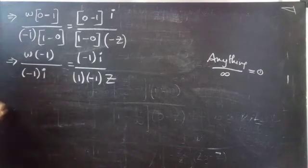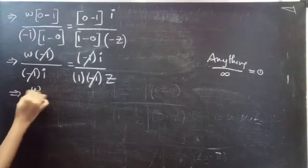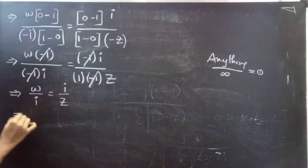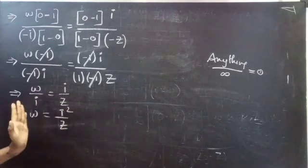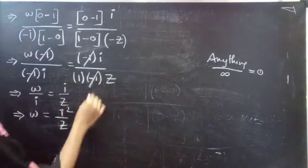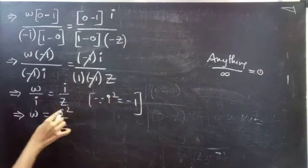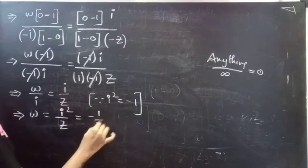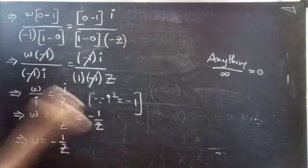Here we cancel −1 on both sides. So you get ω/i = i/z. Therefore ω = i²/z. Since i² = −1, this gives ω = −1/z.